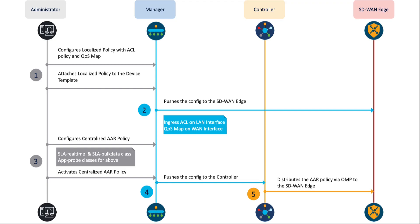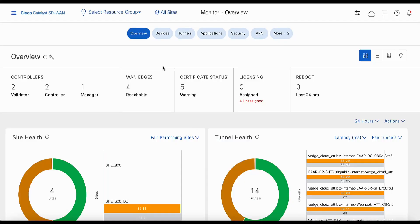These are the steps that have already been done in the interest of time, and I will be showing you inside SD-WAN manager the critical elements to configure the application-aware routing policy. These are the high-level overview steps that an administrator would configure inside SD-WAN manager.